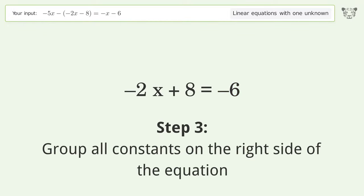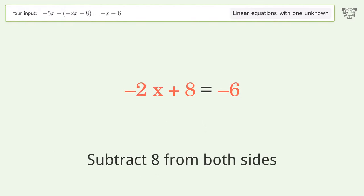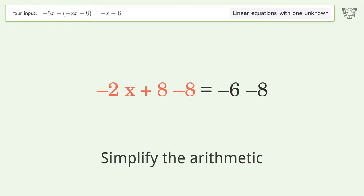Group all constants on the right side of the equation. Subtract 8 from both sides. Simplify the arithmetic.